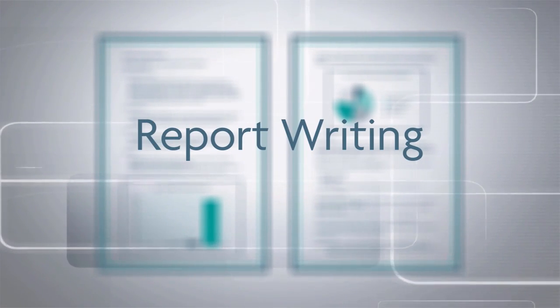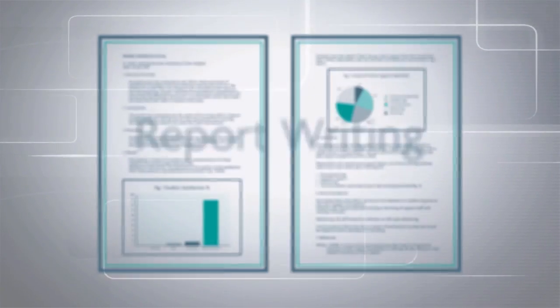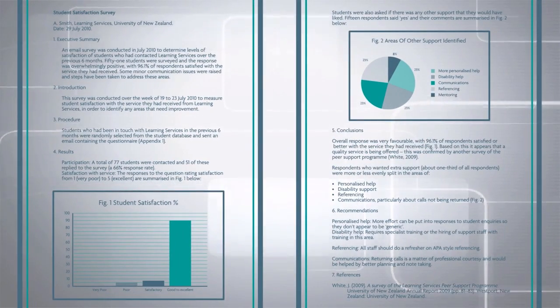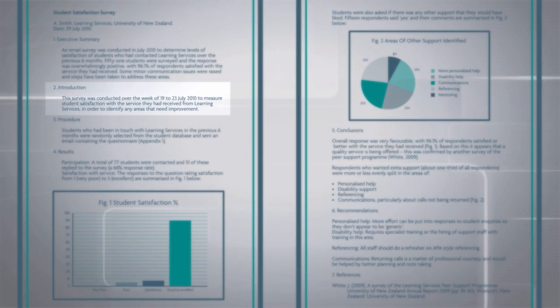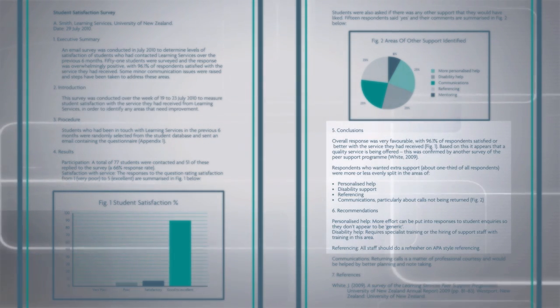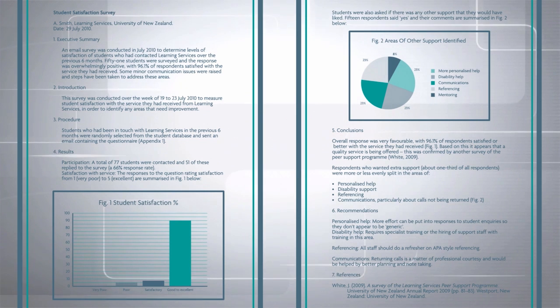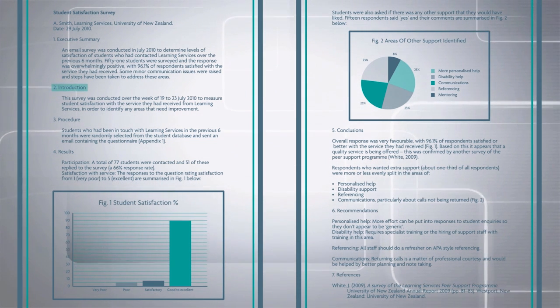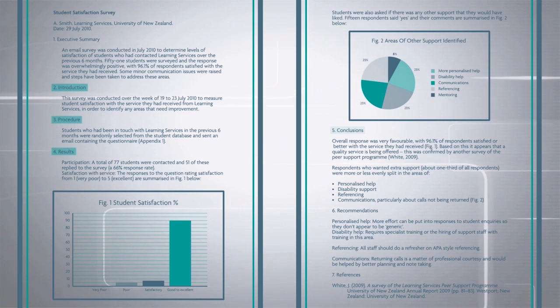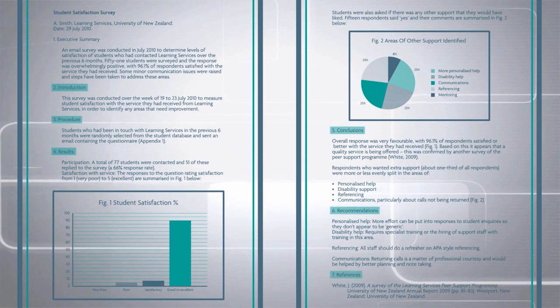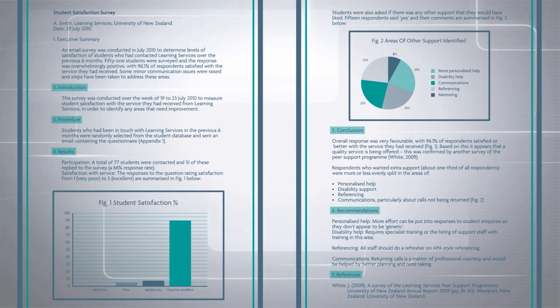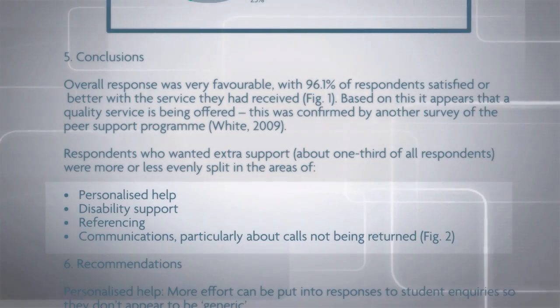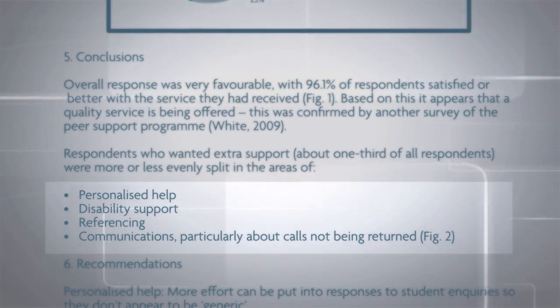Another common formal structure for assignments is a report. A report is commonly organised around the identification of problems or difficulties, and their solutions. Unlike most essays, a report is divided into clearly labelled sections, such as introduction, discussion, conclusions and recommendations. Also, and again unlike an essay, bullet points can be used in the conclusions and recommendations sections of a report.